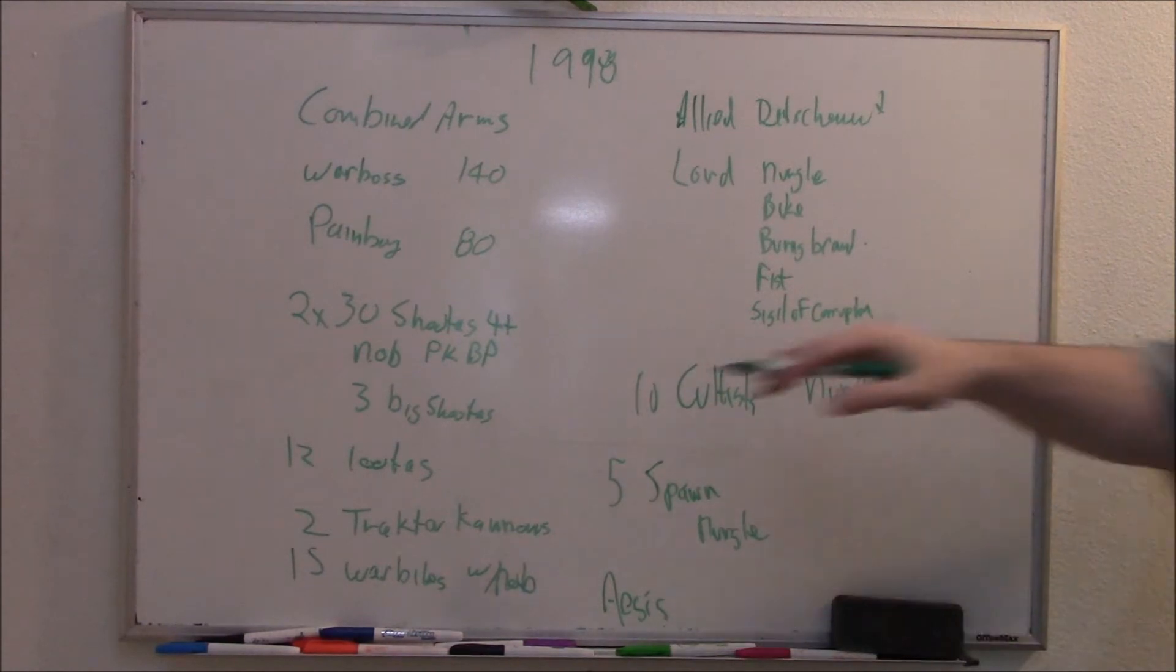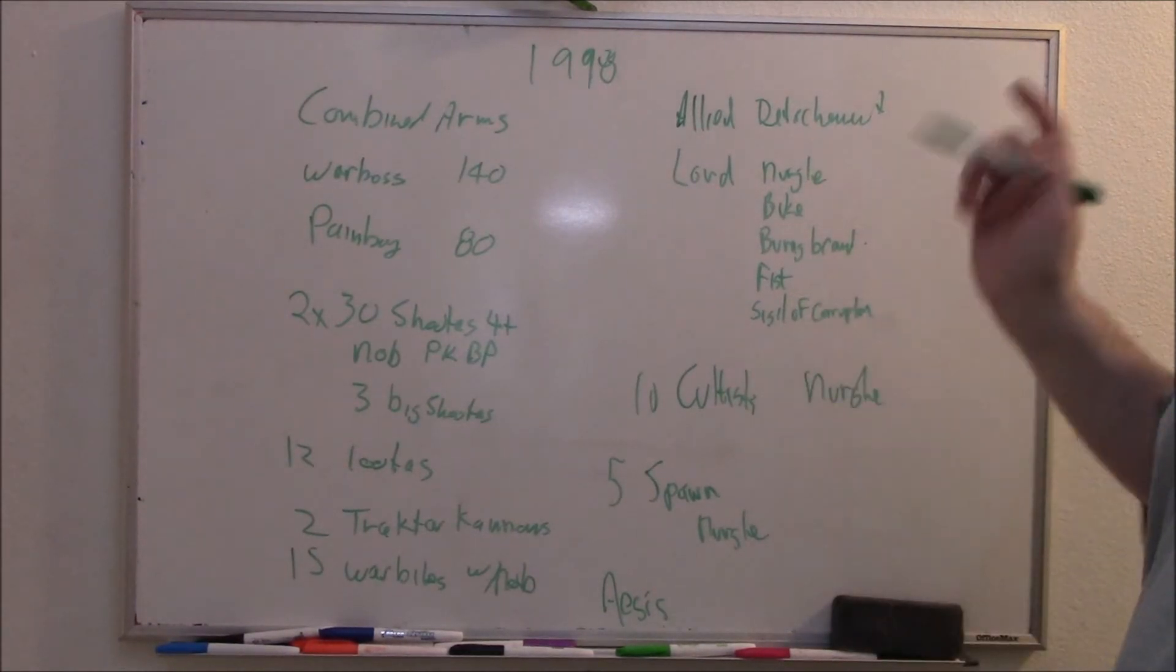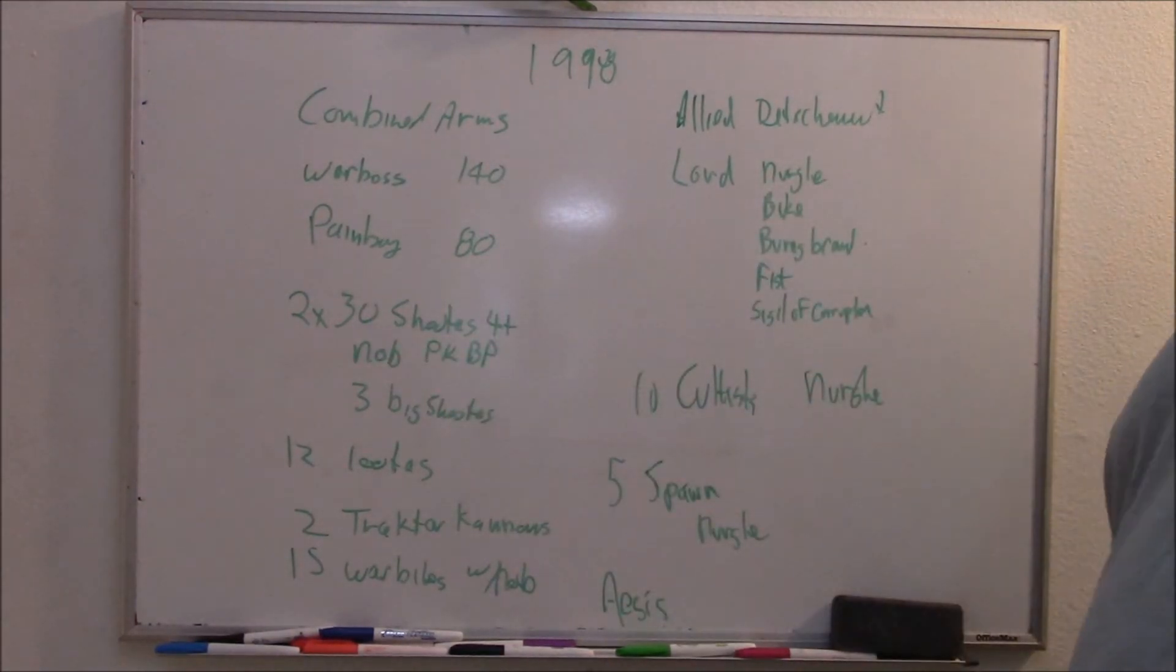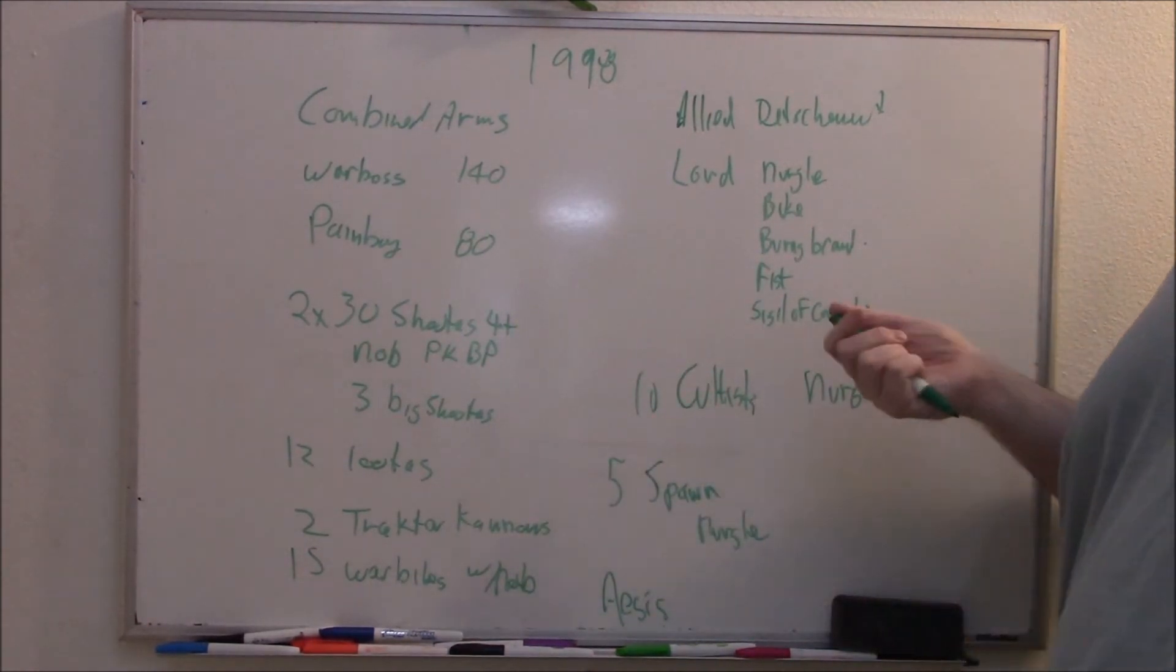So you basically line up your Warbike star on one side, you can line up the Nurgles and the Lord on the bike and the spawn on the other side. And you go that way, 24-inches first turn. Actually, these guys will go 24. These guys will go 12 plus D6.